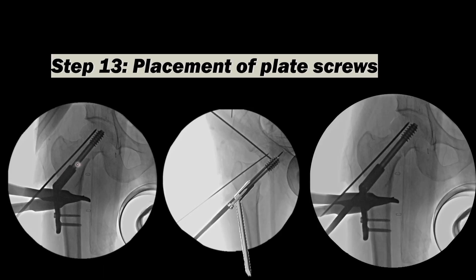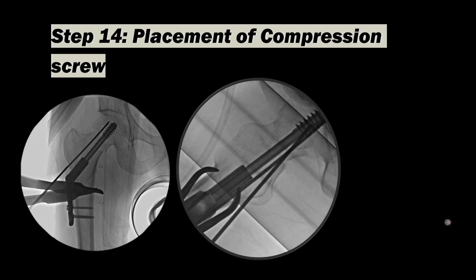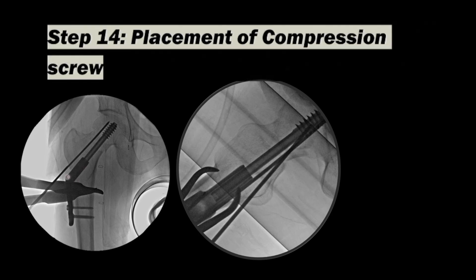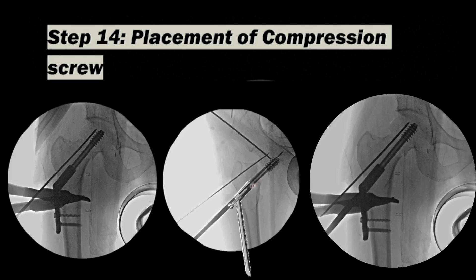Once you have placed the lag screw, insert the barrel plate, then sequentially place the screws in the lower part, because this part should be flush with the lateral surface. If it is slightly proud and you place the Richard screw before that, the plate will become more proud. Always place the inferior screws before placement of the compression screw — the Richard screw. Once satisfied with the plate position confirmed in the lateral view, insert the Richard screw. Its threads engage inside the lag screw, and if the lag screw is slightly short of the lateral cortex, tightening this screw pulls the lag screw outwards, achieving compression.